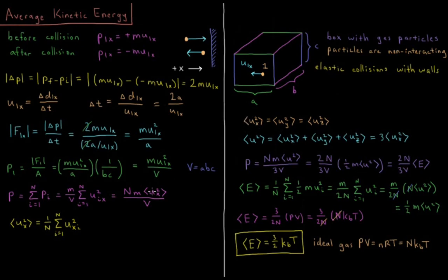Now we try to get the velocities in the other directions. There's no reason to believe the X direction is special: the expectation value of Uₓ² equals that of Uy² and Uz², since there's no potential acting on the particles in any dimension inside the box. The total velocity squared equals Uₓ² + Uy² + Uz², so the expectation value of total U² equals 3 times ⟨Uₓ²⟩.